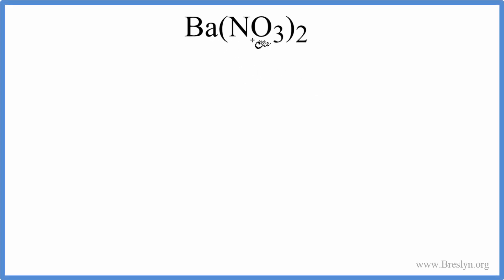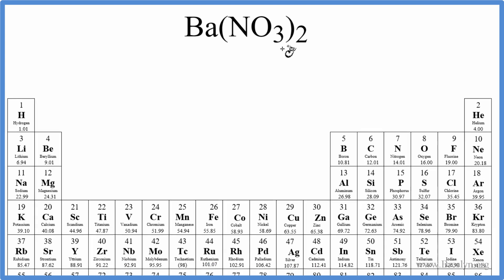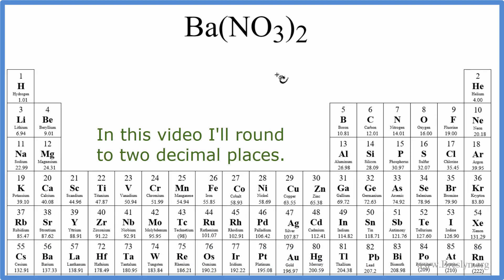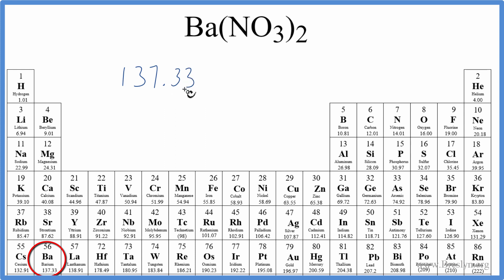To find the molar mass for barium nitrate, that's Ba(NO3)2, we look on the periodic table for barium. That's 137.33 and the units are grams per mole.